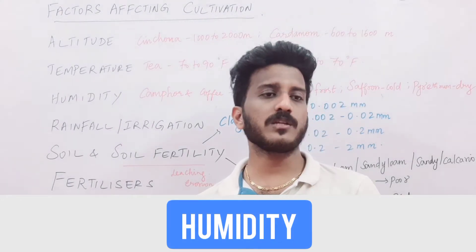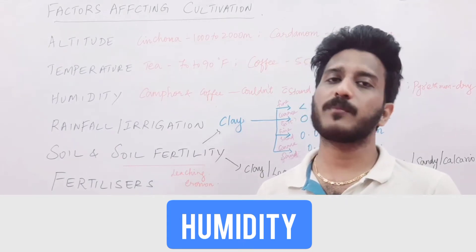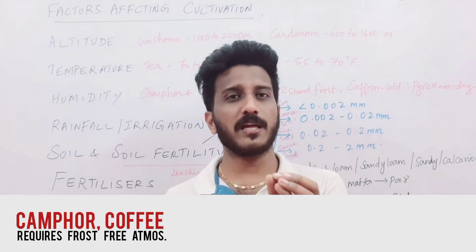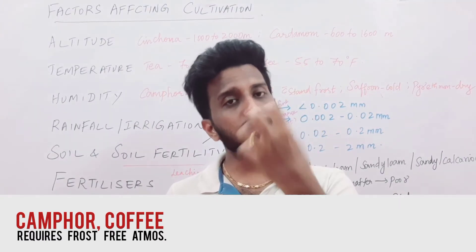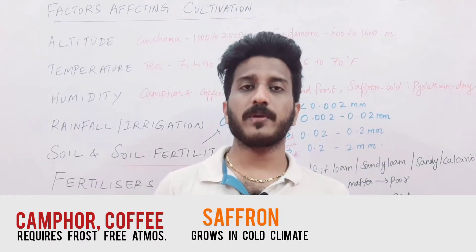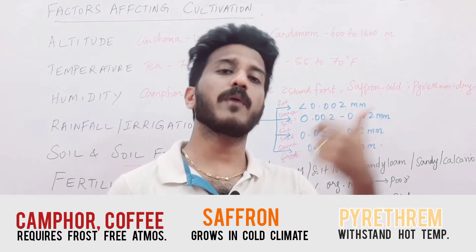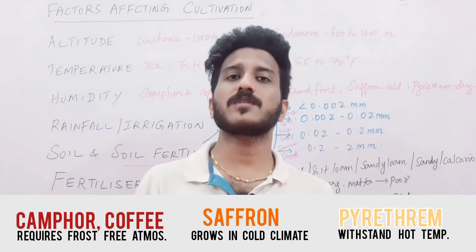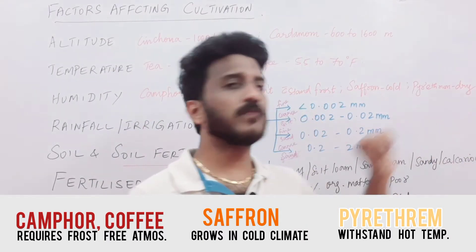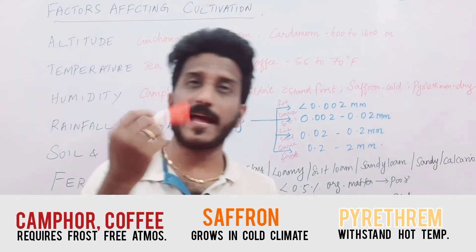The third factor is humidity — the amount of water vapor present in the atmosphere. Humidity plays a major role, just like altitude and temperature. Even when the sun is very hot, as in summer, some plants like pyrethrum will still grow well under the right humidity conditions.